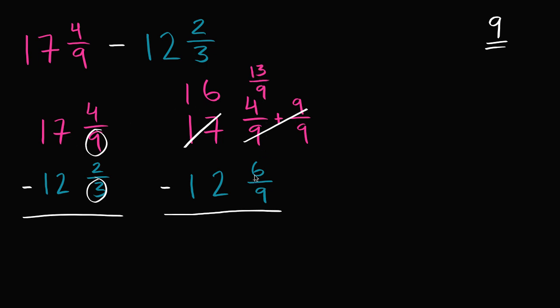Well, 13/9 is larger than 6/9, so I can subtract. What's 13/9 minus 6/9 going to be? Well, 13 of something - in this case ninths - minus 6 of that same something is going to be 7/9. So that's going to be 7/9. 13/9 minus 6/9 is 7/9.